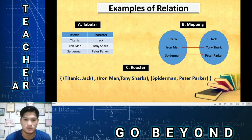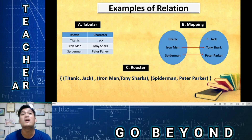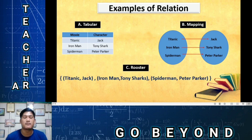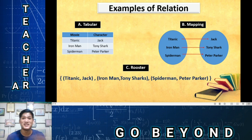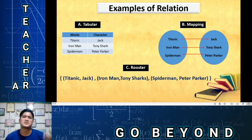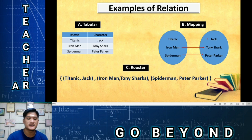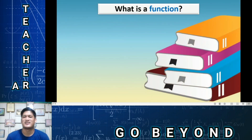I hope you have understood the concept of a relation. Again, a relation is an association between two elements, a correspondence of two variables. There must be two elements involved to be called a relation. So let's proceed to the second topic: functions. What is a function?